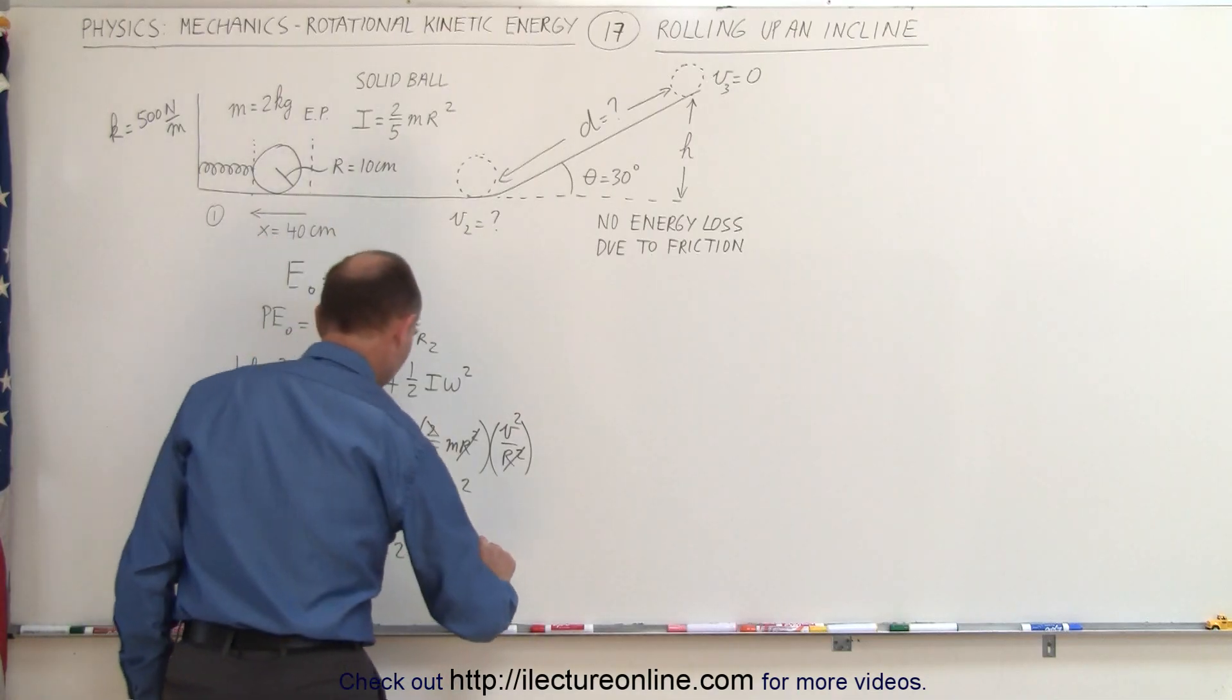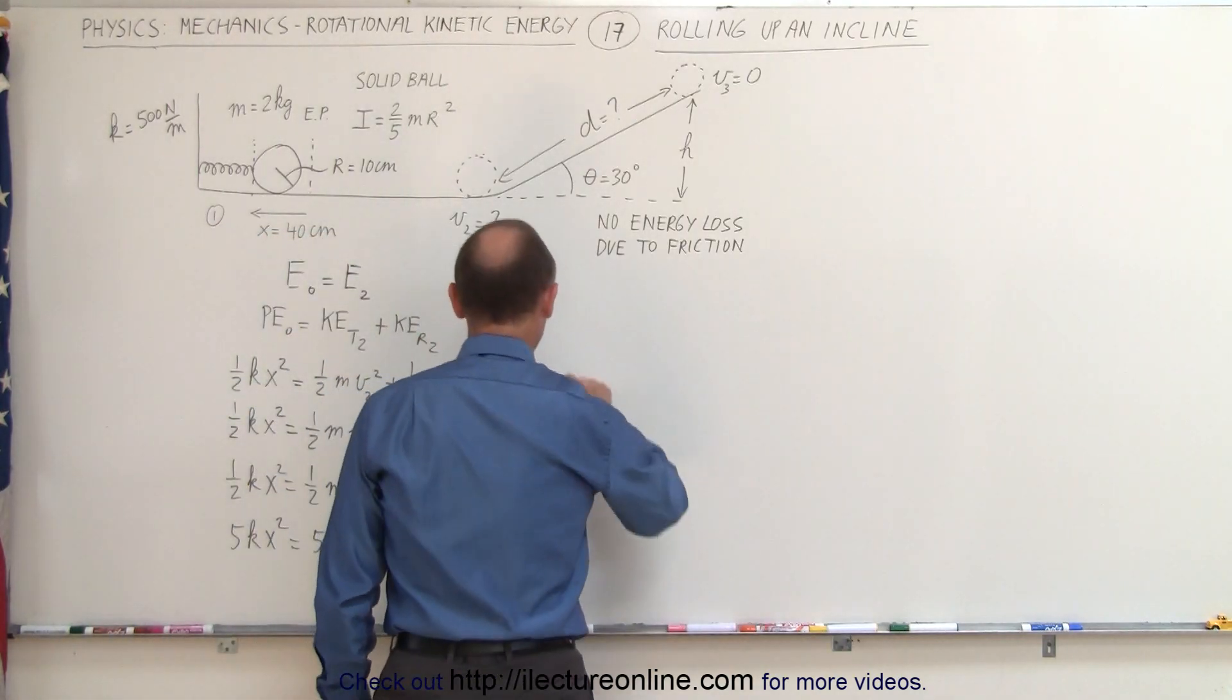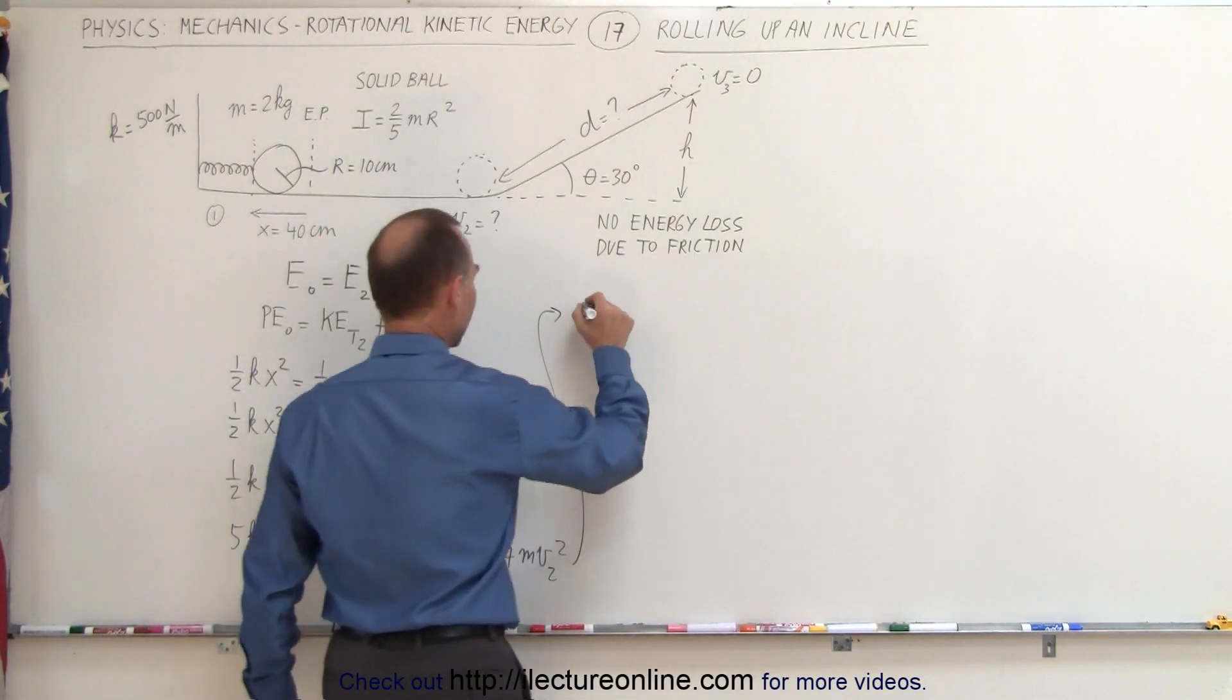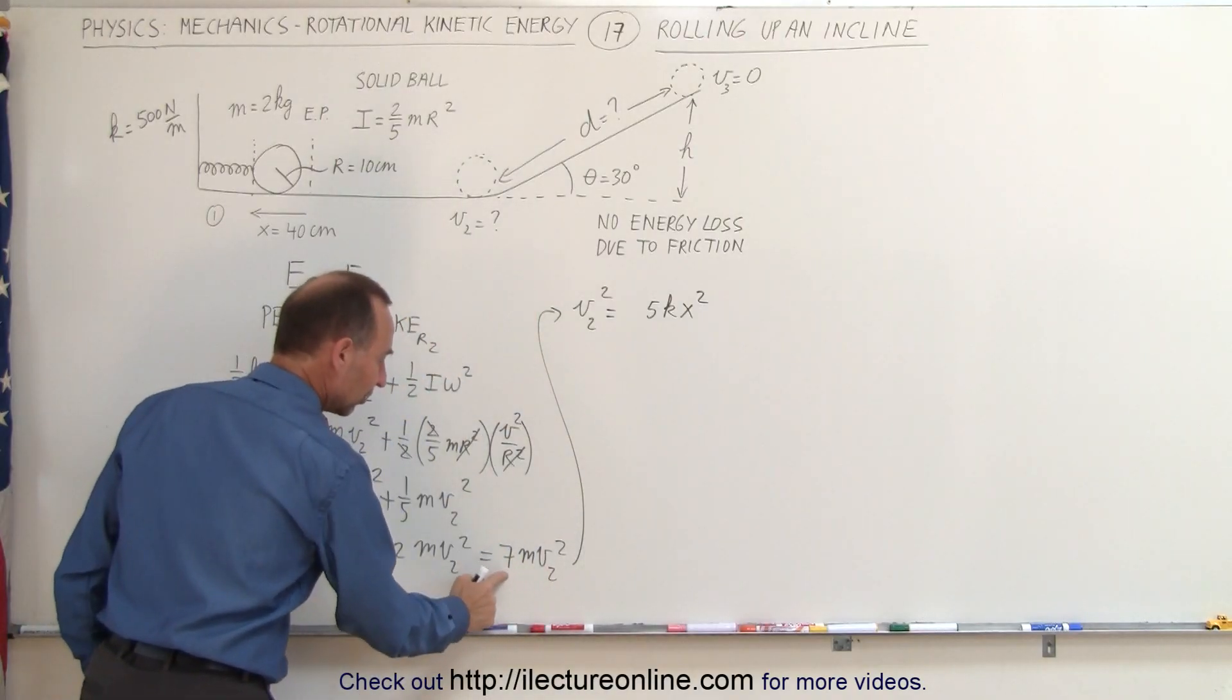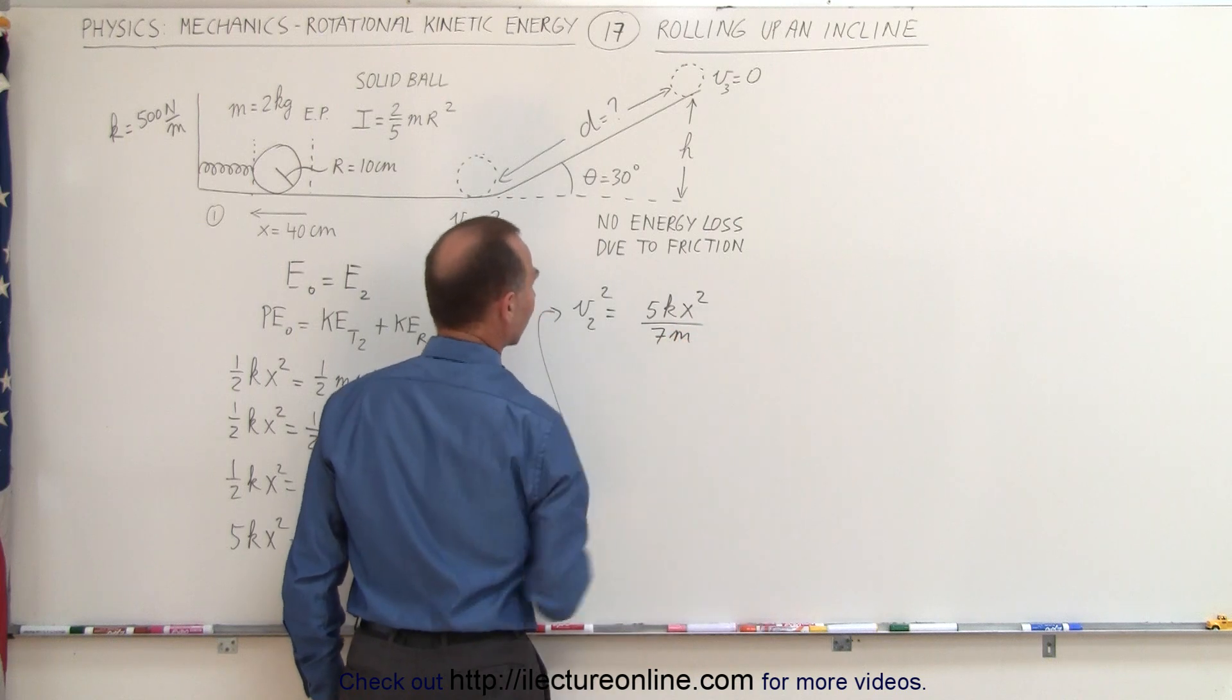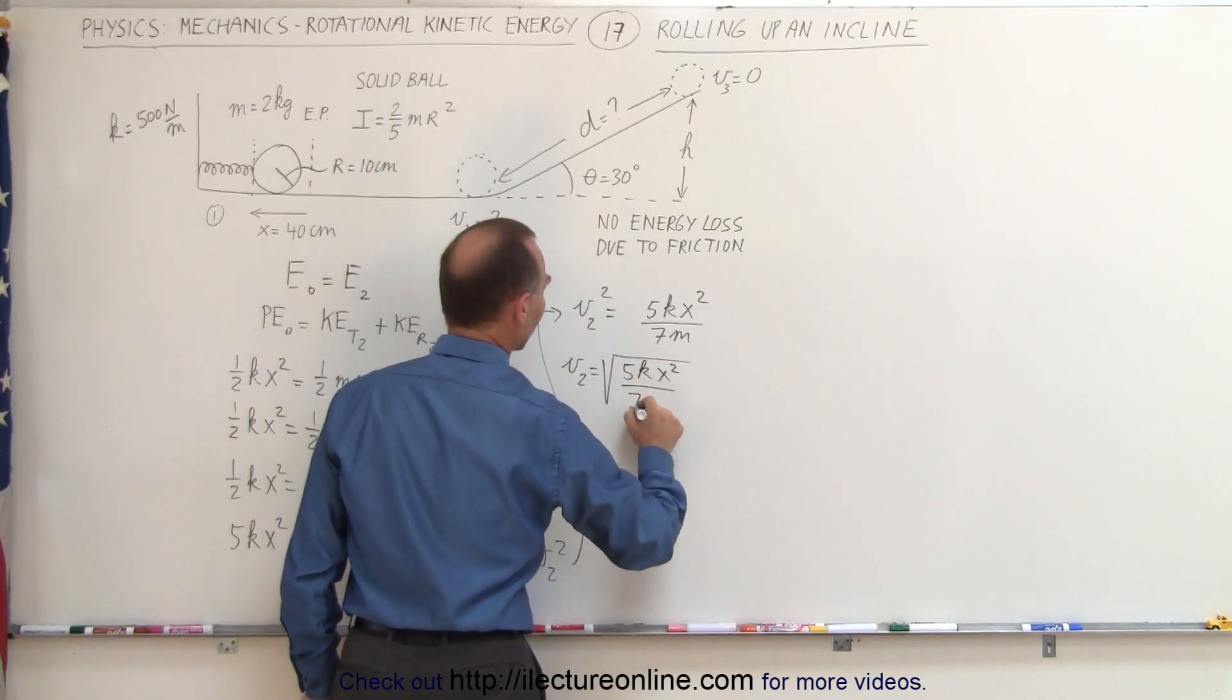That gives us 5kx² equals 5mv₂² plus 2mv₂². Combining those last two terms, this gives us 7mv₂². And finally, solving for v₂, we can do that over here. If we solve for v₂, we can then say that v₂² equals 5kx² and the coefficient of v₂, which is 7m, can then go to the other side. We then divide by that. And finally, v₂ equals the square root of 5kx² over 7m.